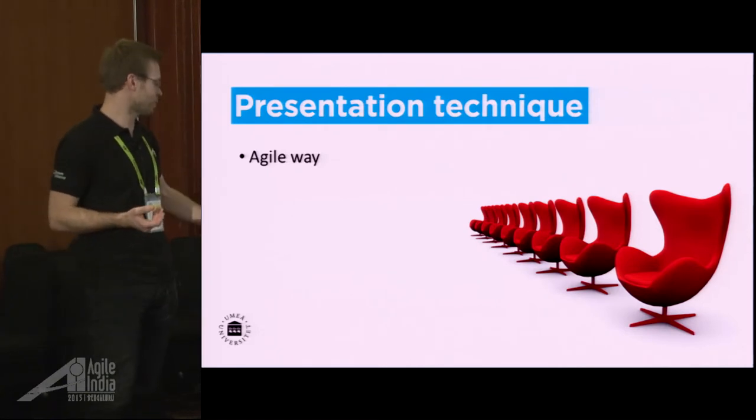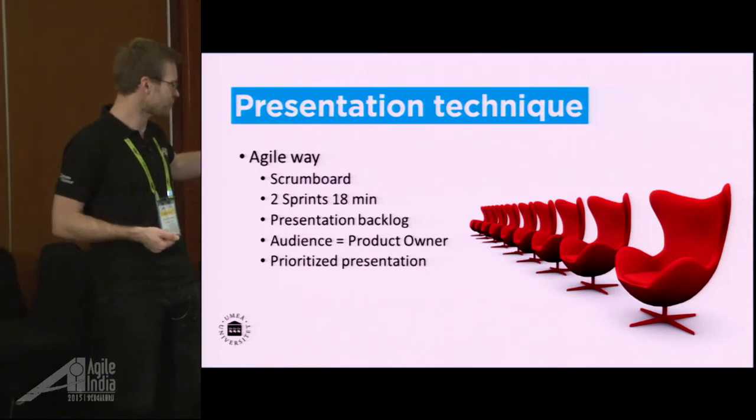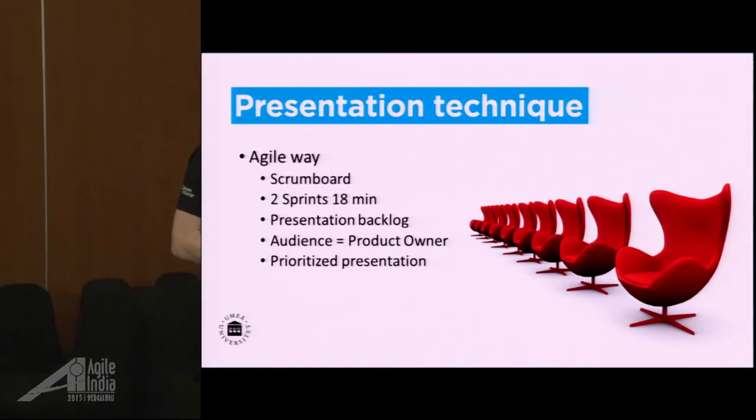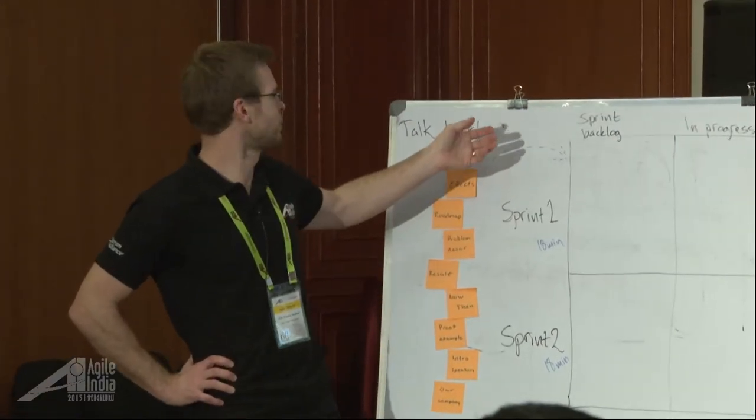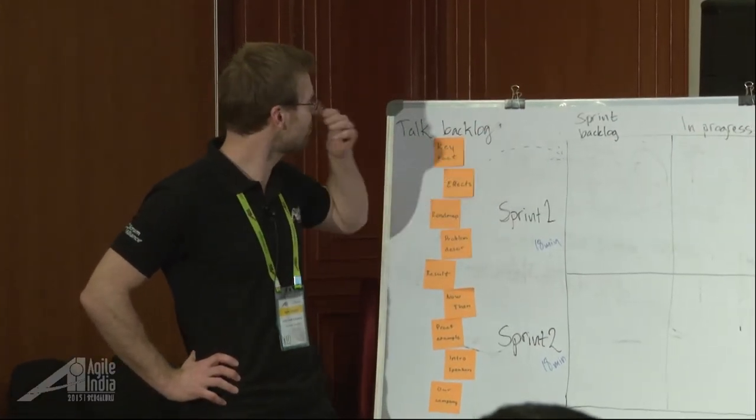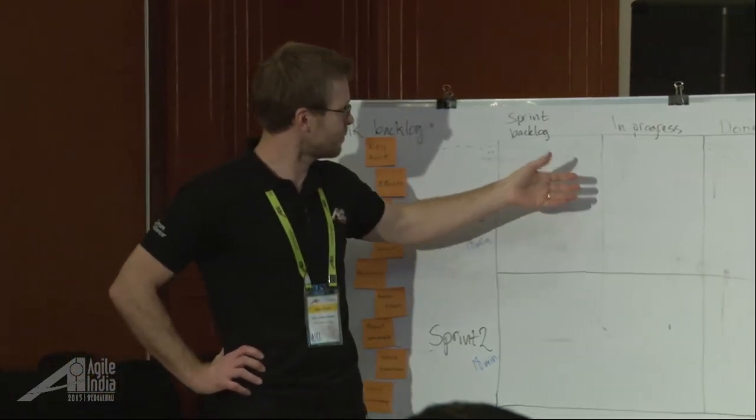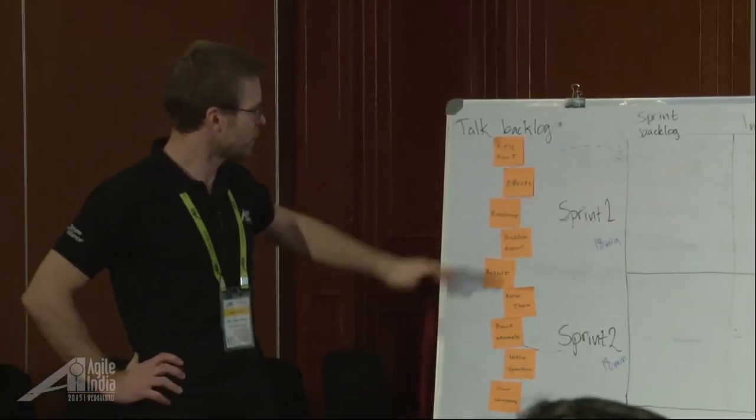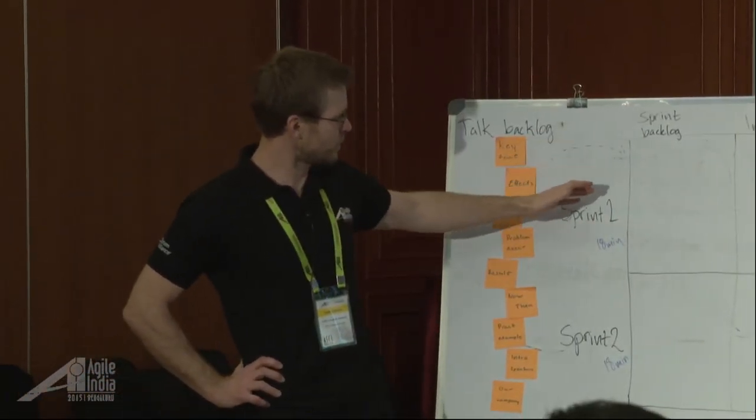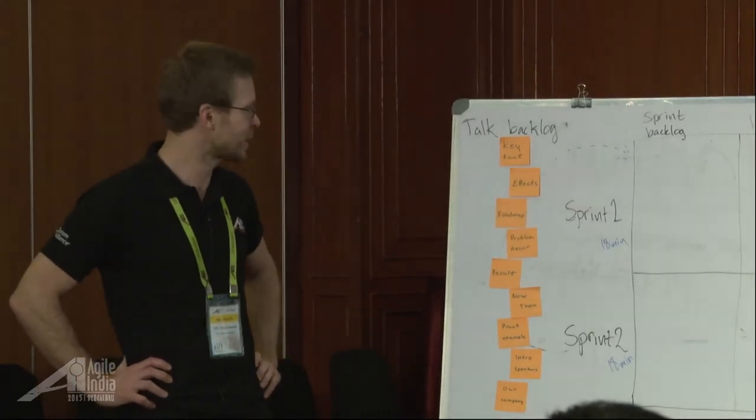We have the voting here now in the list. We have a talk backlog, and we have this whiteboard where we have the sprint backlog. We also have parts in progress and when we've talked about them. So we have divided the board into two sprints, and each sprint is 18 minutes.